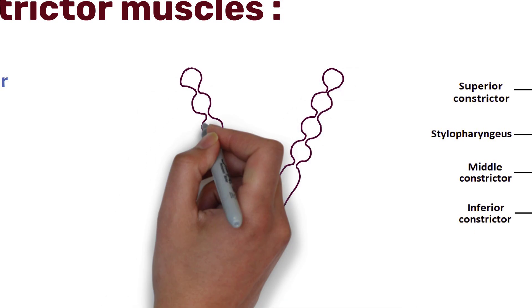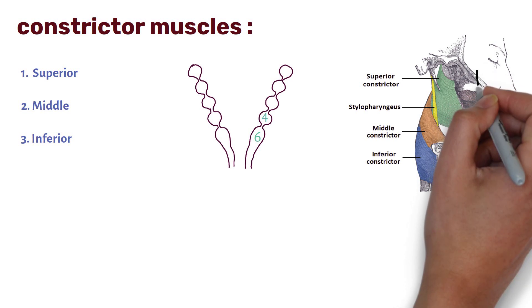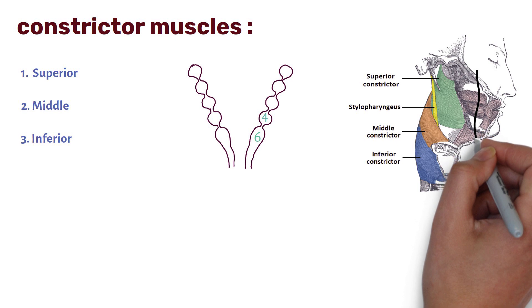These muscles develop from fourth and sixth pharyngeal arches. The origin of constrictors are situated anterior to the posterior opening of nose, mouth and larynx.